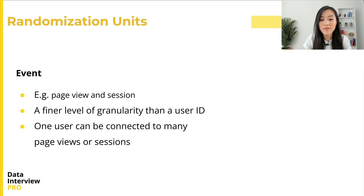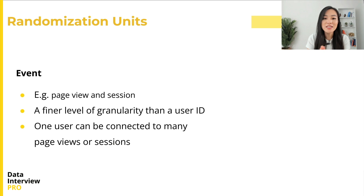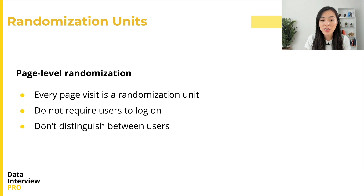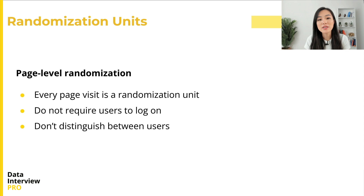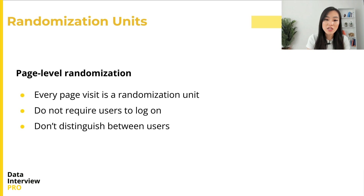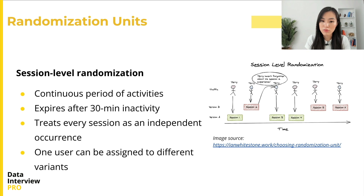Another kind of randomization unit is an event. An event such as a page view or session represents a finer level of granularity than a user ID — one user can be connected to many page views or sessions. With page-level randomization, every page visit is considered a randomization unit. This method is simple because it does not require users to log in, nor does it distinguish between actions from the same or different users.